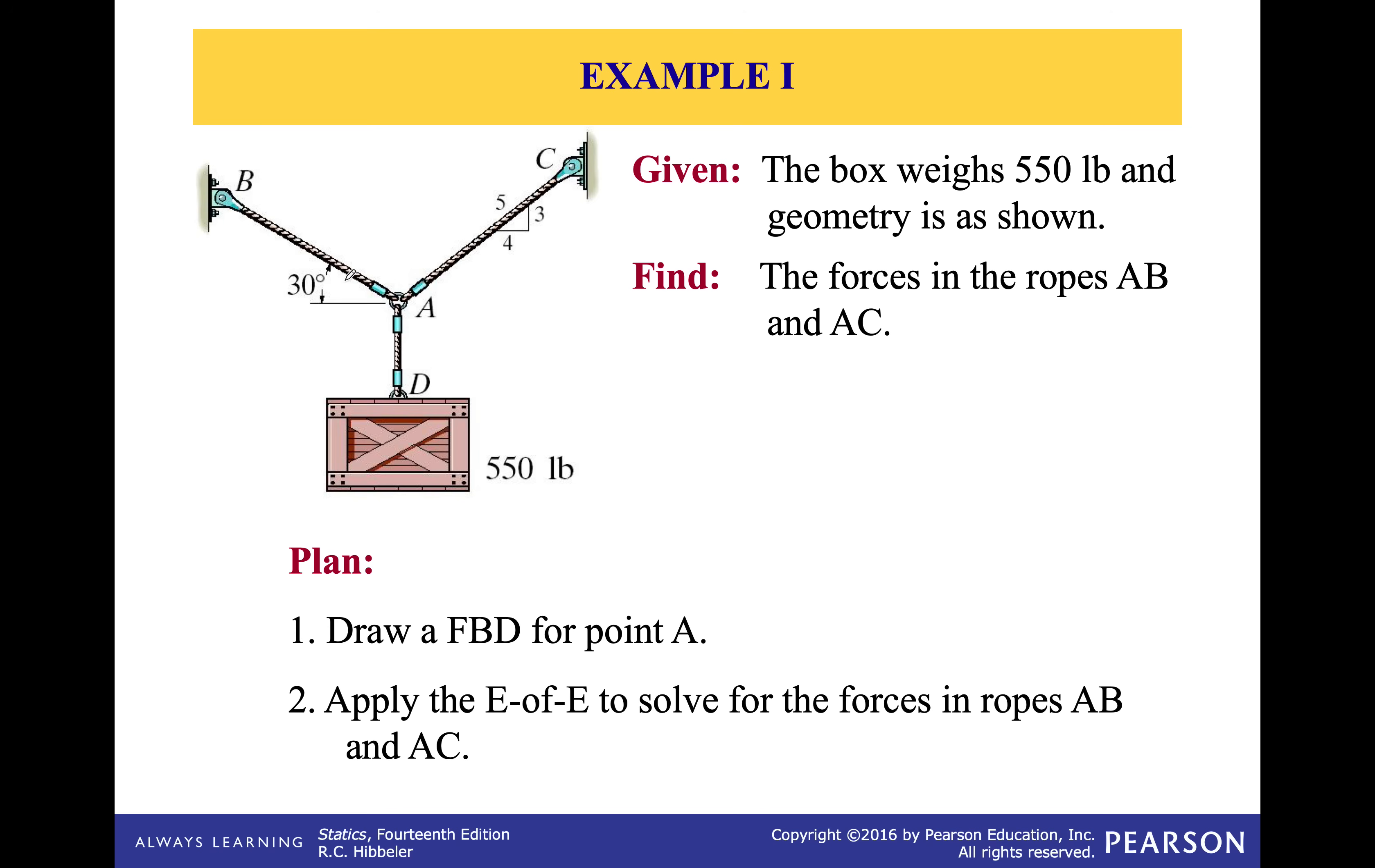If you remember from last time, we said that if you have this kind of structure, you have this ring, and you have three different cables attached to it, each cable is independent from the other. So I have a force here, FAC, and I have another force that way, that's FAB, and I have the weight of the box that's 550 going down. So if I want to construct the free-body-diagram for this structure, we need to isolate point A and construct the free-body-diagram for it.